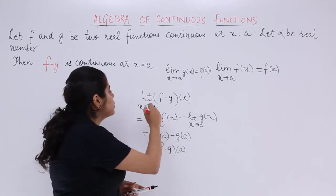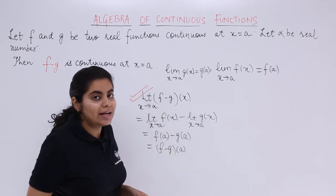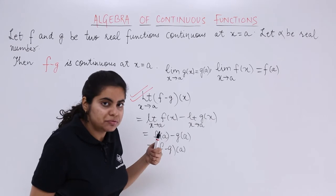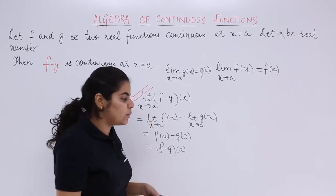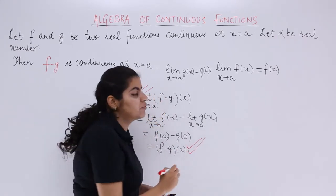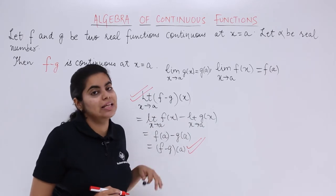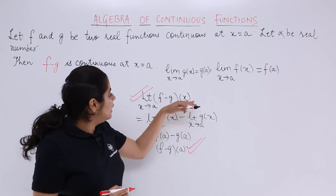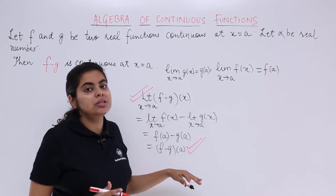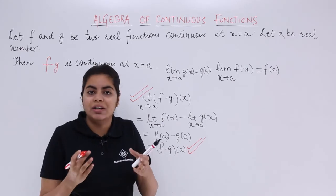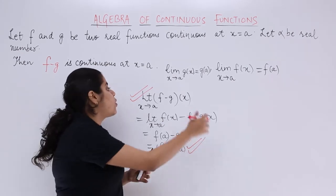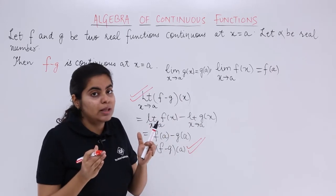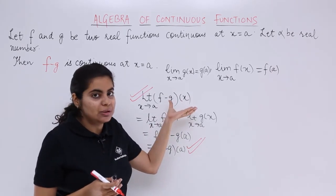That means what? That means you started with something called as limit in case of difference of functions, and you reached where? You reached the value of the function at that point in case of difference. You know that when limit is equal to value of the function, we say that it is the matter of continuity. So when two functions are in difference form, they both were individually continuous. Their difference is also continuous.